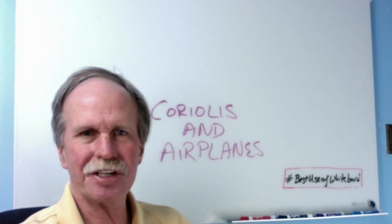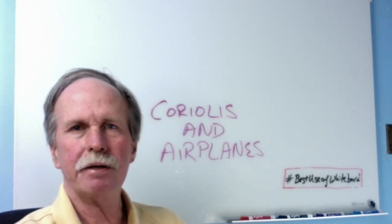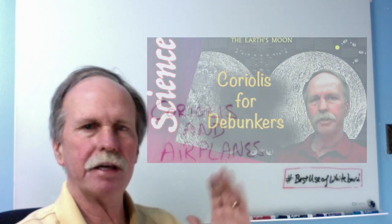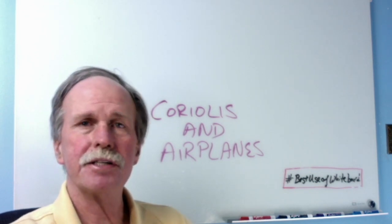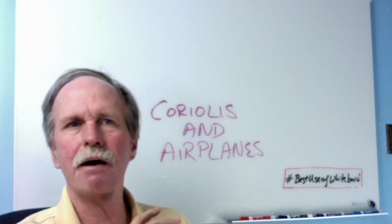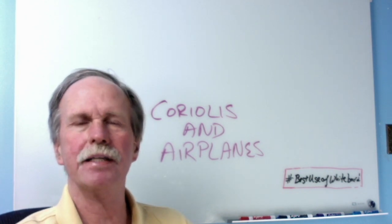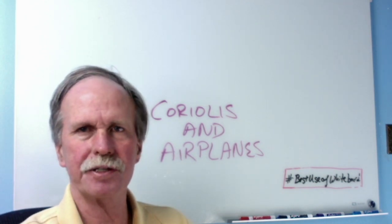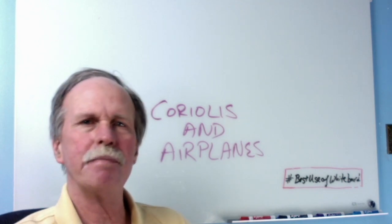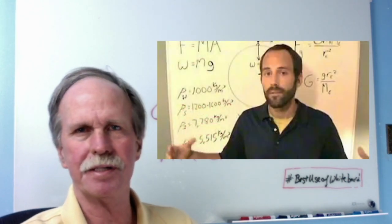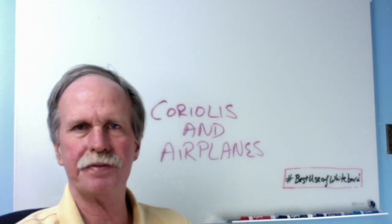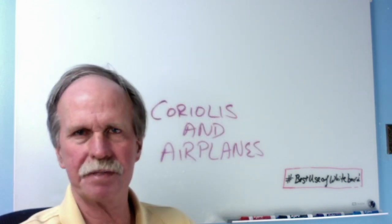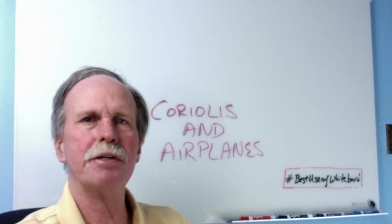Hi everyone, greetings from Northern Michigan. This is Bob the Science Guy. Not long ago I did a video on the Coriolis effect and what you needed to know about it. In the flat earth community, there still seems to be a lot of confusion about how aircraft in flight deal with Coriolis factors. Most of this confusion can be traced back to Brian Mullins, a flat earth engineer. Today we're going to go over his video and try to make some sense out of it.